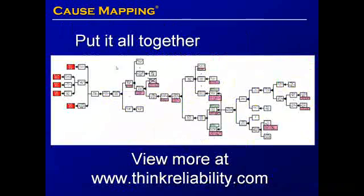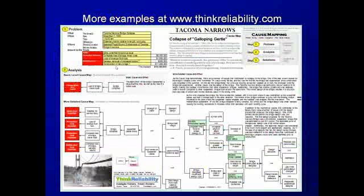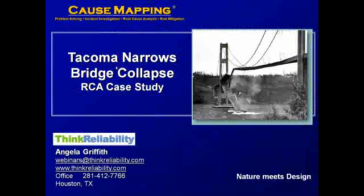When you put it all together, you can see that our cause map has many causes, evidence boxes, and solution possibilities. You can see the analysis used to put together this cause map on our examples page at www.thinkreliability.com. You can also download the one-page PDF explaining the analysis of the failure of the Tacoma Narrows Bridge, and see more examples at www.thinkreliability.com. I hope you enjoyed this root cause analysis case study of the Tacoma Narrows Bridge collapse.